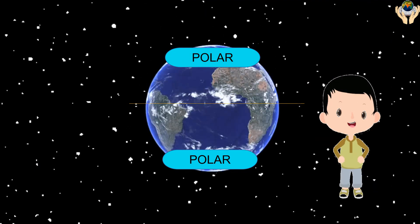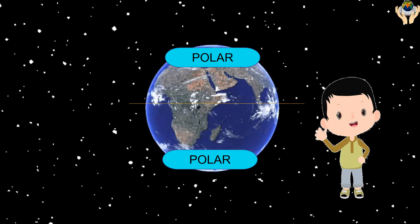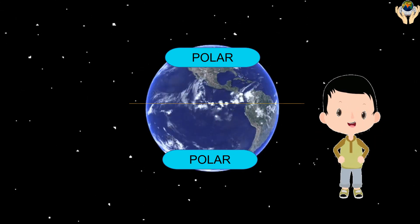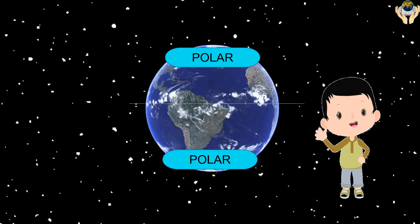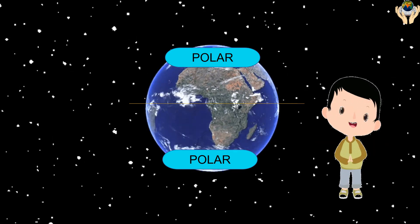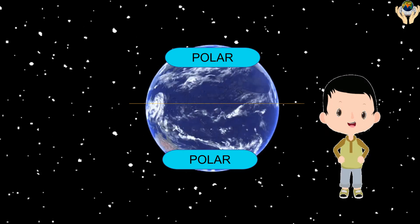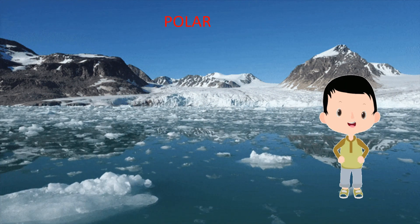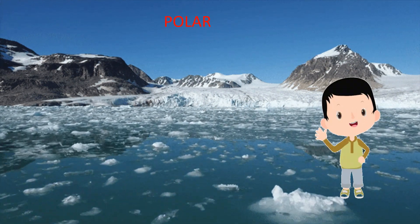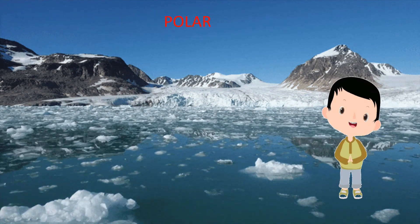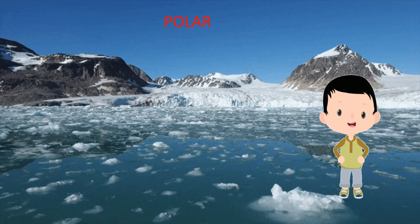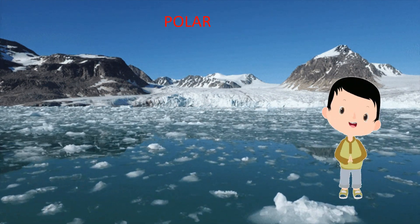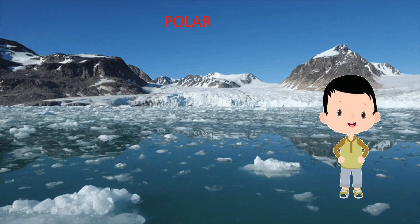Polar zones are found north of the Arctic Circle and south of the Antarctic Circle. These climates are characterized by permanent ice and tundra, with only about four months of the year having above-freezing temperatures. Winters are long and cold, with annual temperatures mostly below freezing. The soil is covered in ice throughout the year, but hundreds of species of mosses, algae, and lichen survive the harsh conditions in the polar biome.